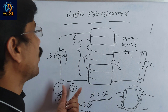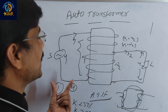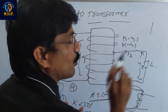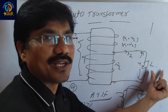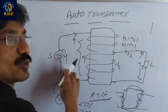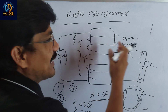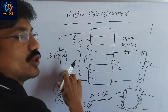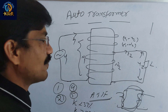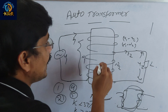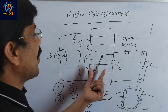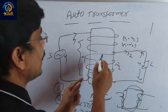The fourth drawback is that any fault occurring on the load side is directly reflected into the source side.